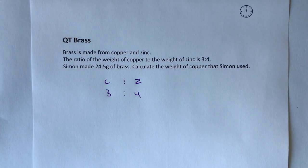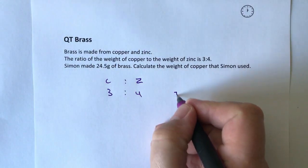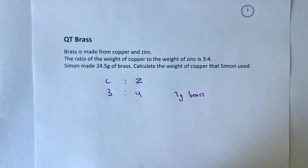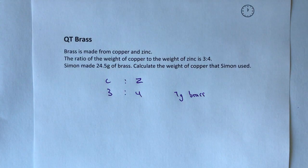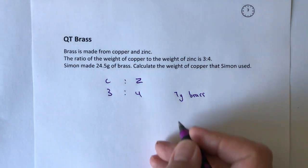In other words, if you were making seven grams of brass, what you would use is going to be three grams of copper and four grams of zinc. Well, actually in this particular case, apparently I am making 24.5 grams of brass.